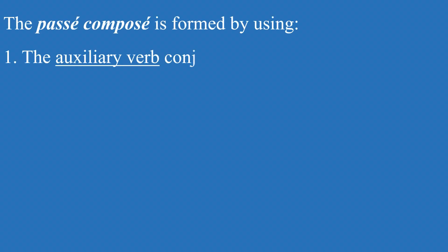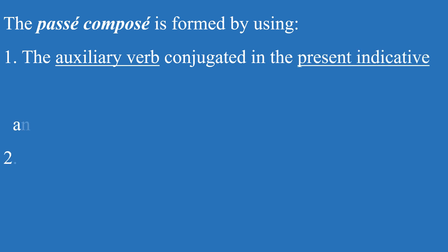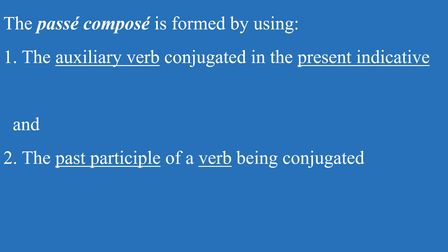The passé composé is formed by using the auxiliary verb conjugated in the present indicative tense and the past participle of the verb that is being conjugated. There are two auxiliary verbs: the verb avoir, to have, and the verb être, to be. Most verbs, and that includes the verb avoir itself, are conjugated using the auxiliary verb avoir.